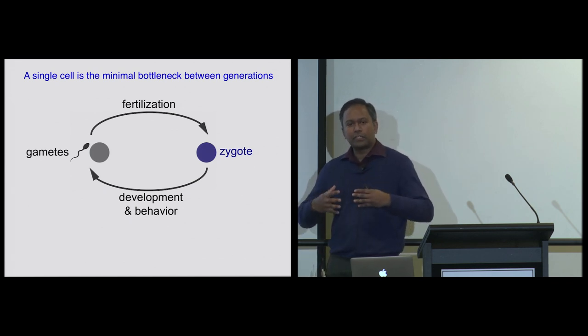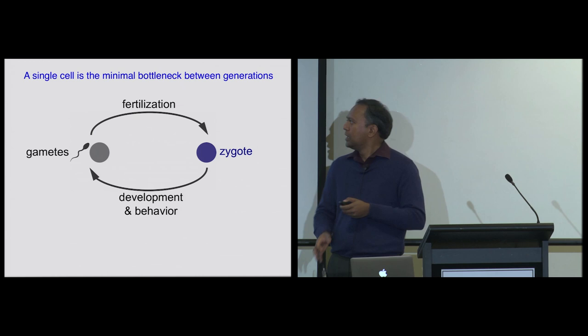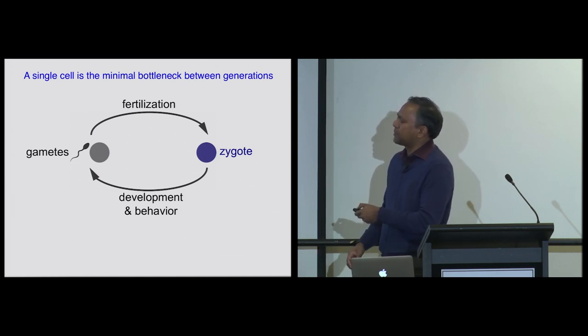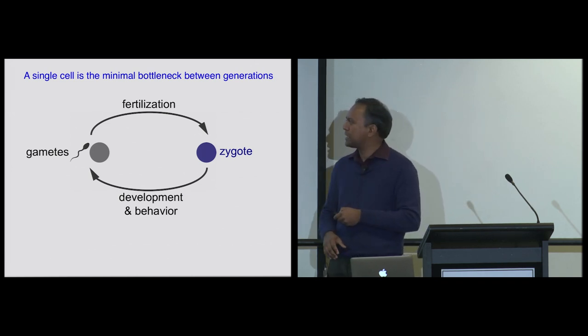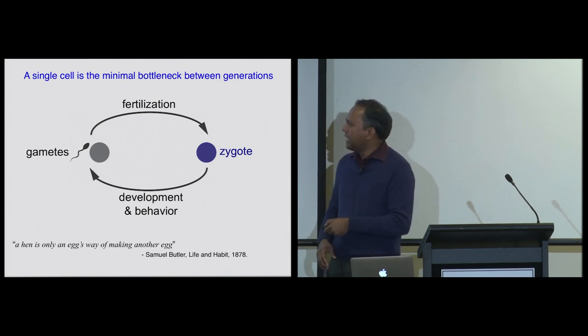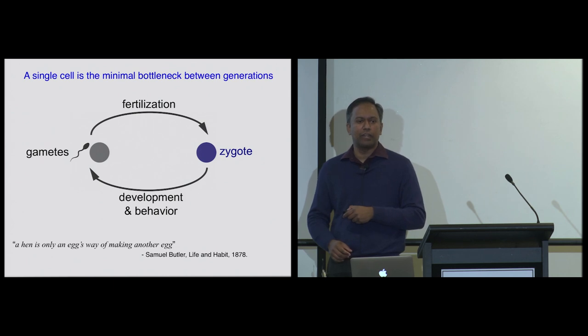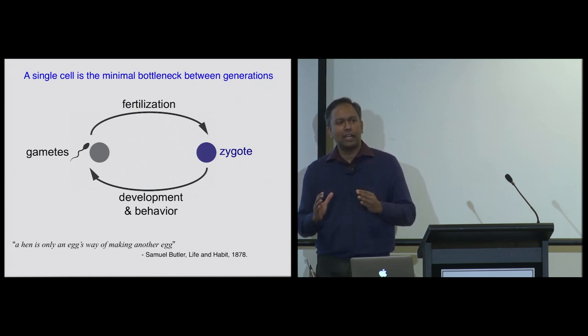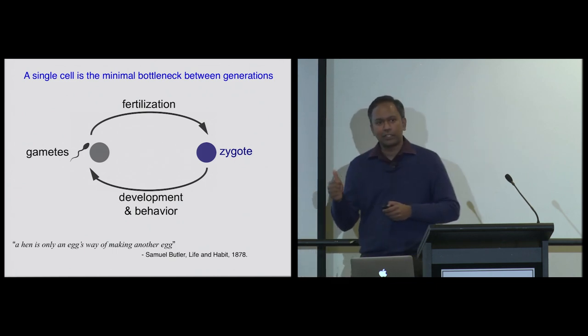So if we are going to think about information that's passed from one generation to the next, the first thing we have to think about is what is the minimal space in which you could put that information? As most of you are aware, we are born with gametes, a sperm and an egg that fuse together upon fertilization, giving you a single cell called a zygote. Then we go through elaborate development and behavior, and in the next generation, the same cycle ensues. The minimal space in which you have to put all the information for going from one generation to the next is a single cell.